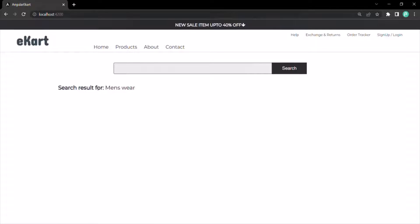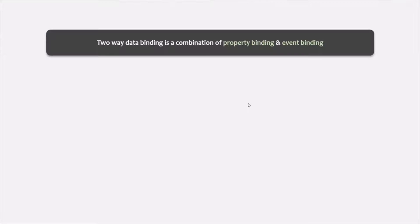Two-way data binding is basically a combination of property binding and event binding. Using property binding, we can bind data from the component class to the view template, and using event binding, we can bind data from the view template to the component class. Let's see how we can achieve two-way data binding by combining these two.